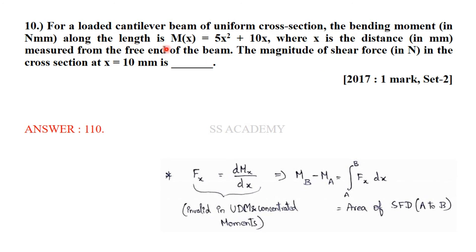For a cantilever beam, the bending moment along the length is given as M(x) = 5x² + 10x N·mm, where x is the distance in mm from the free end. The shear force at x = 10 mm is asked — a 2017 one-mark GATE question. Since F(x) = dM(x)/dx, differentiating gives F(x) = 10x + 10. At x = 10 mm: F = 10(10) + 10 = 110 N.